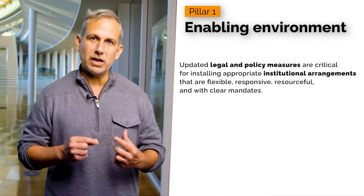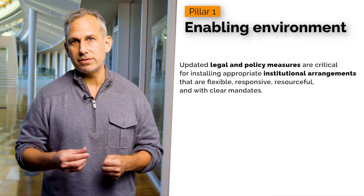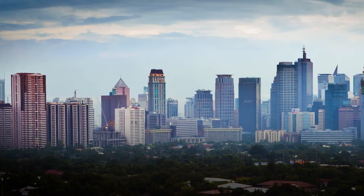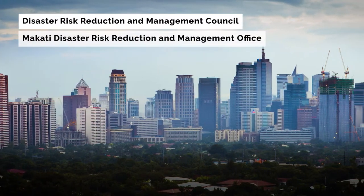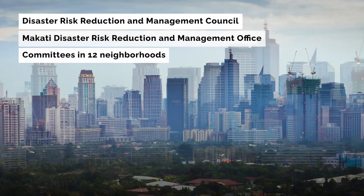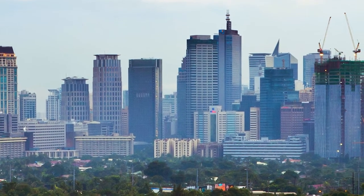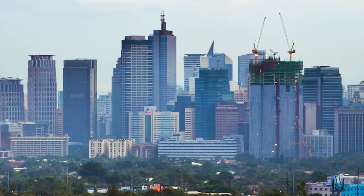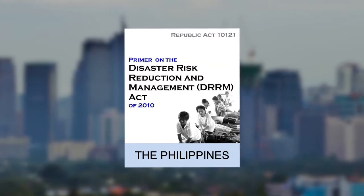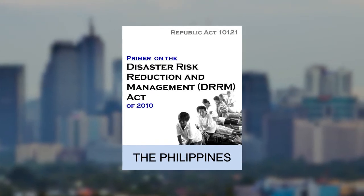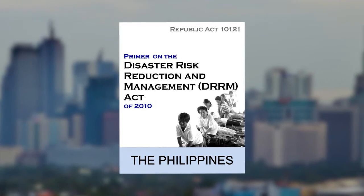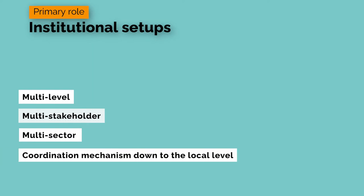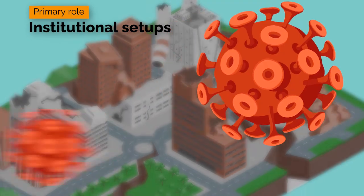Updated legal and policy measures are critical for installing appropriate institutional arrangements that are flexible, responsive, resourceful, and with clear mandates. For example, in the Philippines in 2012, the City of Makati established the Disaster Risk Reduction and Management Council, the Makati Disaster Risk Reduction and Management Office, and Disaster Risk Reduction and Management Committees in 12 neighborhoods. Through these bodies, relevant laws and policies are enacted for mainstreaming disaster risk reduction at the local level, including the Philippines Disaster Risk Reduction and Management Act enacted in 2010, which allocates at least 5% of the city's total revenue to the local disaster risk reduction and management fund. The primary role of the institutional setups is to establish and promote a multi-level, multi-stakeholder, multi-sector coordination mechanism down to the local level, which is crucial to manage complex types of cascading and compound disasters.